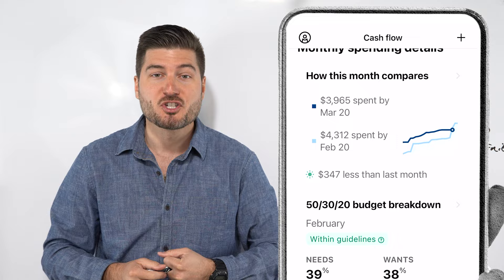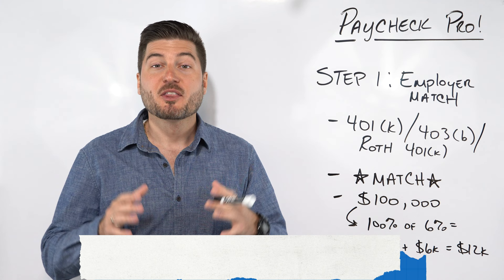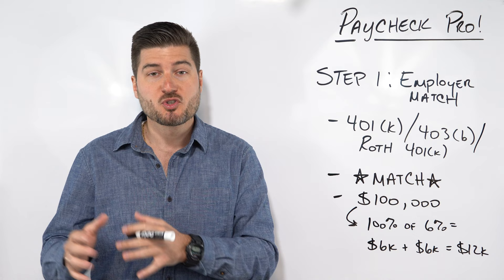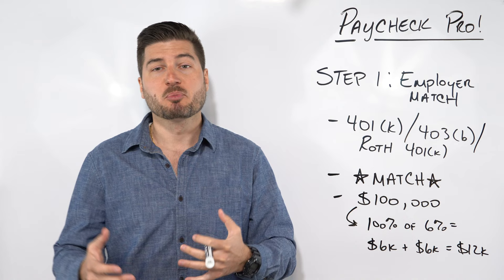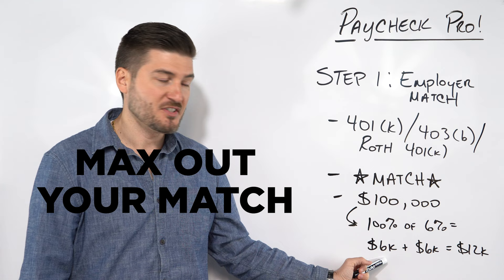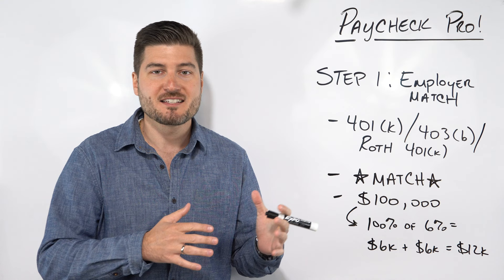Step number one is contributing to an employer match if you have one. This could be something like a 401k, a 403b, or a Roth 401k, or some sort of other tax advantage retirement plan. The reason that this is step number one is that most of you will have some sort of match, essentially free money, up to a certain percentage of what you contribute. Many employers match a portion of the employee's contributions up to a certain dollar amount or percentage. For example, if you make $100,000 a year, your employer may match up to 100% of your contributions up to 6% of your salary. This is why it's smart to contribute at least up to the max of what your employer matches. So 6% of $100,000 is six grand, your employer is giving you six grand, you're contributing six grand, six plus six is $12,000. So you're essentially getting an additional $6,000 towards your retirement for free while simultaneously lowering your taxable income by $6,000 because a traditional 401k is tax advantaged.